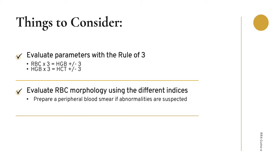When evaluating RBC parameters, keep in mind the rule of 3: your RBC count multiplied by 3 should be equivalent to your hemoglobin level plus or minus 3, while your hemoglobin level multiplied by 3 should equal your hematocrit level plus or minus 3. Using the rule of 3, we can easily detect abnormalities involving red blood cells. Use your RBC indices to evaluate RBC morphology, and if any abnormalities are observed or suspected, a peripheral blood smear should be done and any abnormal RBCs reported accordingly.